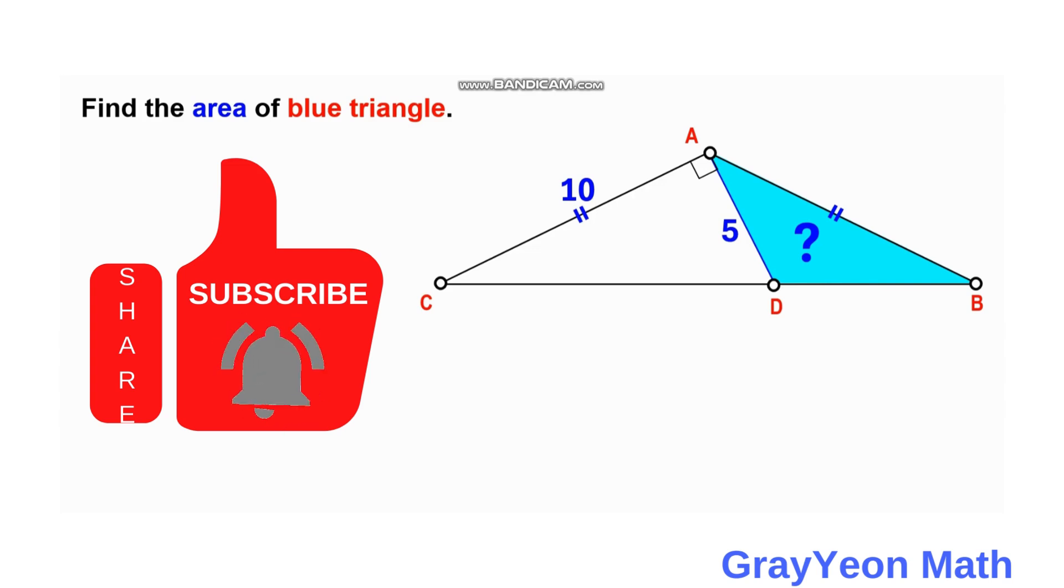Welcome to GrayYeon Math. We are asked to solve this problem. We have this isosceles triangle ABC, and inside this, a portion of this isosceles is a right triangle with legs of 5 and 10 unit lengths. We are required to find the area of this triangle ADB, the blue triangle.